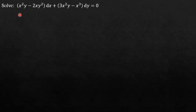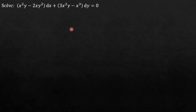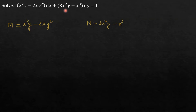We have been given a differential equation: x²y − 2xy² dx + 3x²y − x³ dy = 0. Our first step is to identify M and N. The value of M is x²y − 2xy², and the value of N is 3x²y − x³.